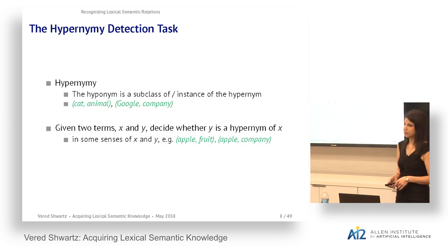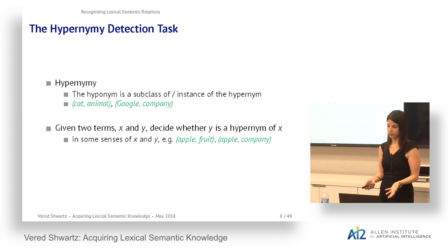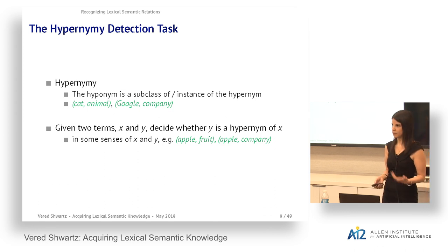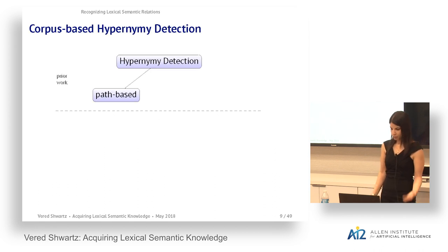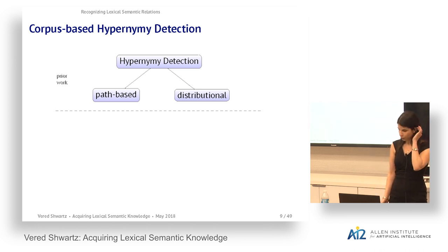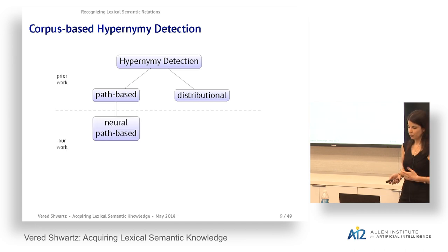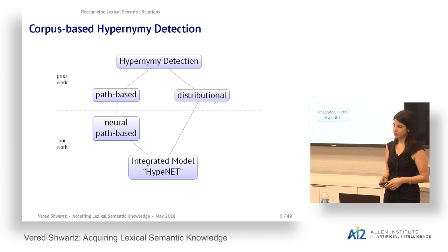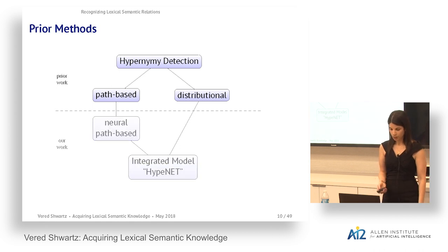The hypernymy detection task is a binary classification task: the model gets two words x and y and must decide whether y is a hypernym of x. The words are given without any context, so the model should consider all different senses. For example, apple can have as hypernym both 'fruit' and 'company.' Previous methods for hypernymy detection can be divided into two main approaches: path-based and distributional.